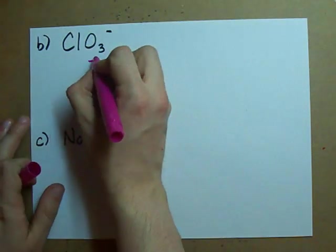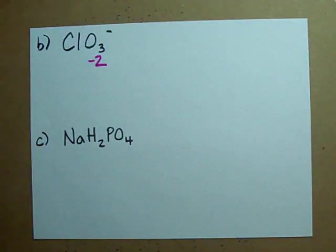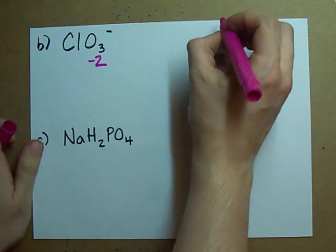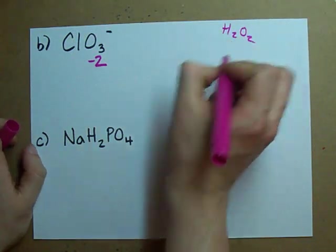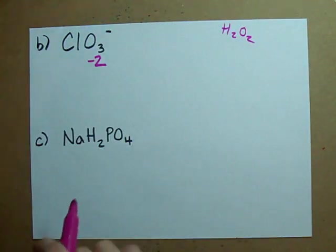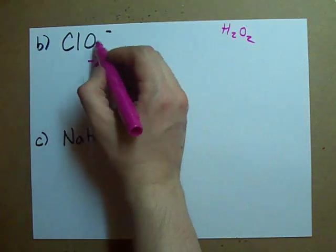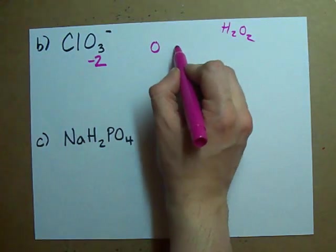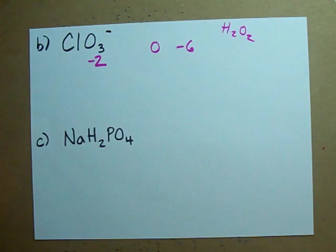Oxygen's always minus two. Oxygen's minus two here. This isn't a peroxide. The only peroxide you'll ever see, remember, it's probably H2O2. It's not. So what I've got here are my oxygens contributing a total charge of minus six.